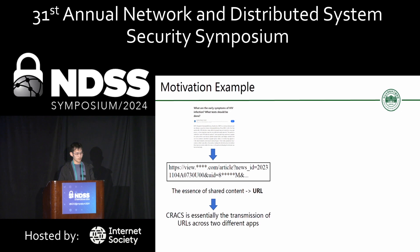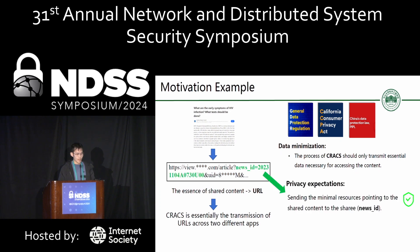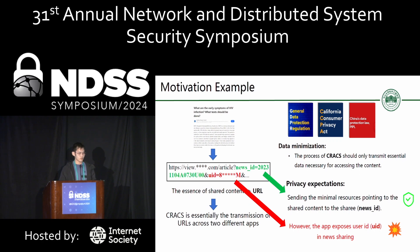Returning to the earlier example, the essence of shared content is a URL. So CRACS is essentially the transmission of URLs across two different apps. According to existing privacy regulations such as GDPR and CCPA, apps are required to follow the principle of data minimization. In other words, the CRACS process should only transmit essential data necessary for accessing the content, like the news ID in the URL. However, apps also send the user ID of the sharer, which violates the principle of data minimization and potentially increases the risk of privacy leaks.